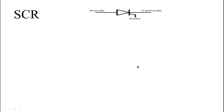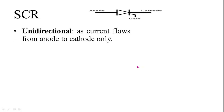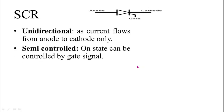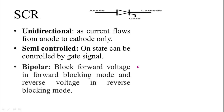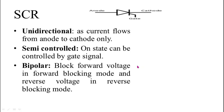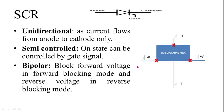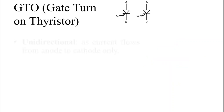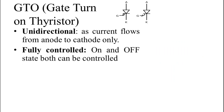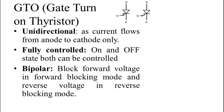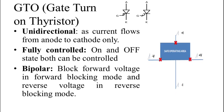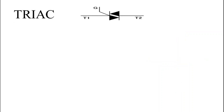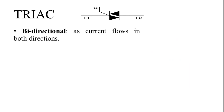Next is silicon controlled rectifier. It is unidirectional as it allows current to flow from anode to cathode — it allows the positive direction of current only. It is a semi-controlled switch because only the on state can be controlled. It is bipolar because it blocks forward voltage in forward blocking mode and reverse voltage in reverse blocking mode. Next is gate turn-off thyristor, GTO. It is also unidirectional and bipolar. The only difference between SCR and GTO is that SCR is semi-controlled and GTO is fully controlled, so the safe operating area of GTO is the same as that of SCR.